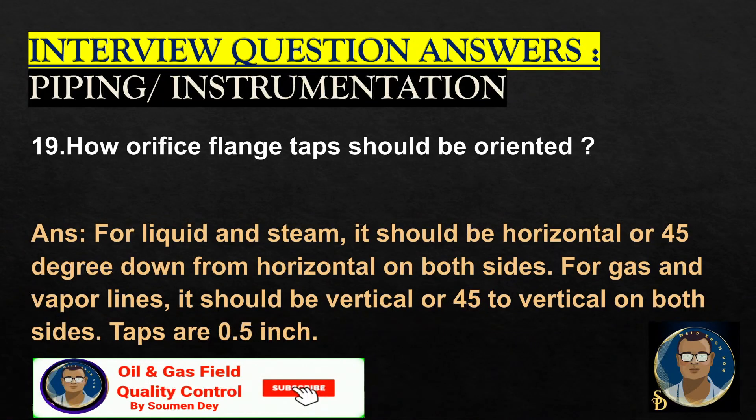How should orifice flange taps be oriented? For liquid and steam, it should be oriented horizontal or 45 degrees down from the horizontal on both sides. For gas and vapor lines, it should be vertical or 45 degrees to vertical on both sides. Taps are 0.5 inch.